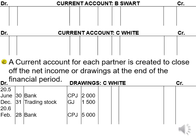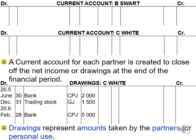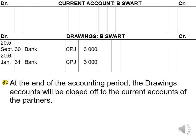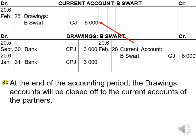Each partner also has a drawings account — for example, Drawings CY — which records all money taken by that partner during the year. At the end of the accounting period, the drawings account is closed off to the current account of the partner, just as in the sole trader, but to the current account rather than the capital account. The drawings account of each partner is credited, and the current account of each partner is debited. It is very important that the partner's name is always included — write 'Drawings BSWAT', not just 'Drawings', and 'Current Account BSWAT', not just 'Current Account'. If you do not write the partner's name, you do not get the mark.